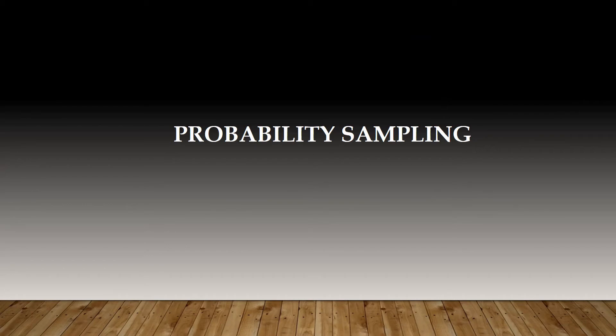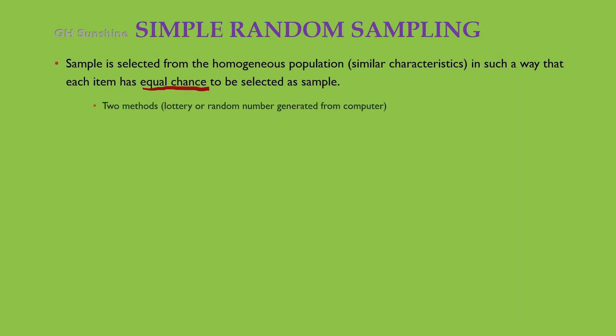Now we move to probability sampling techniques. First, simple random sampling. The sample is selected from a homogeneous population, meaning the characteristics of the population are similar. All items have an equal chance to be selected as a sample — that is the keyword: equal chance. Under simple random sampling there are two methods: the lottery method and the random number method, which is normally generated by computer.